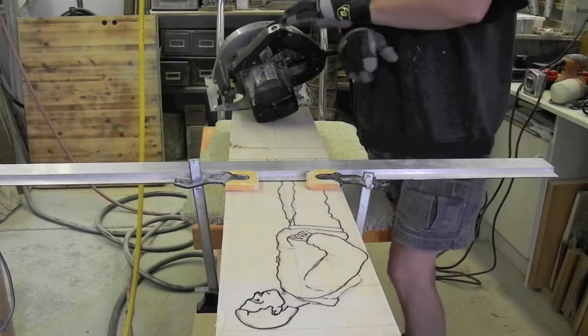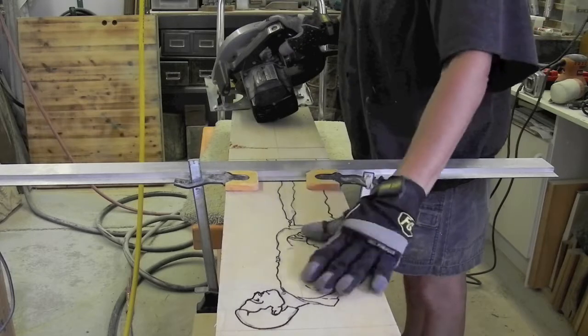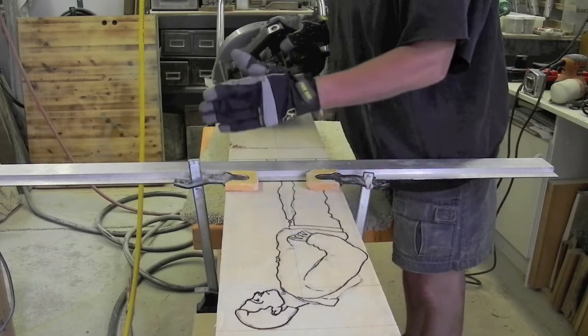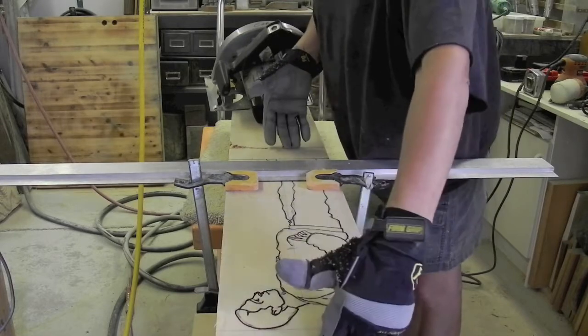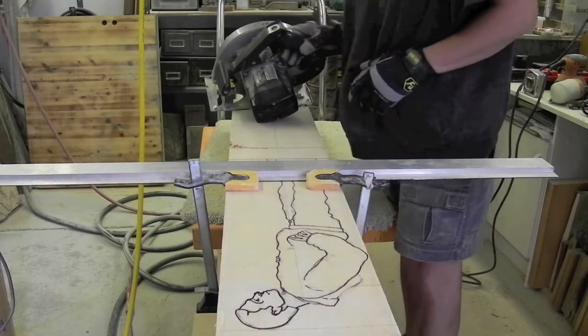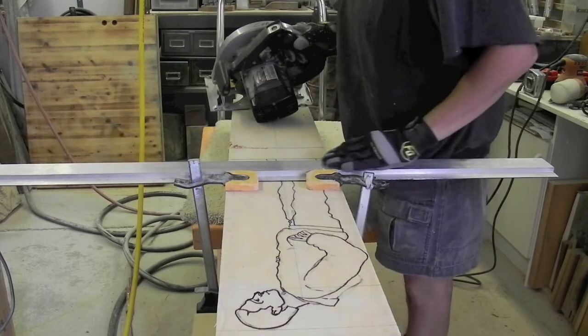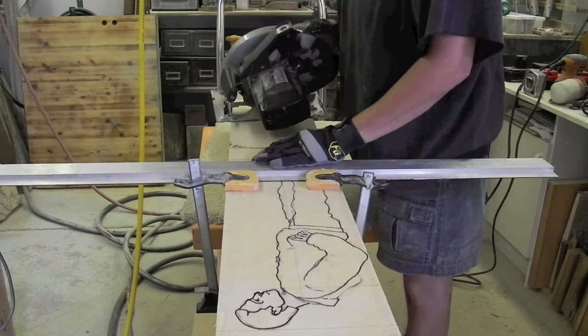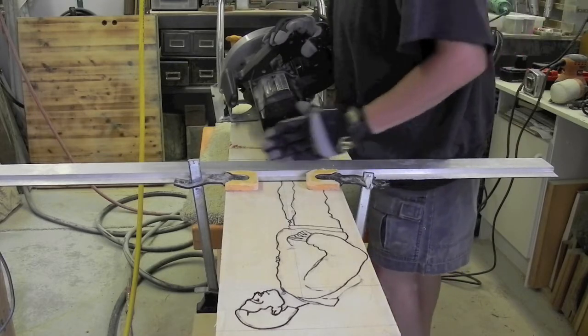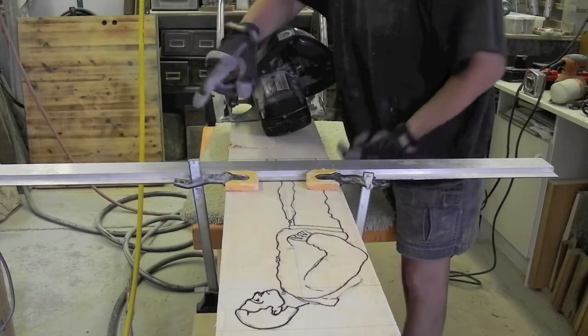All right, now that I have the profiles drawn out on the two sides and actually the front and back, I want to release the piece that I'm going to be sculpting from this larger piece of wood. So I have set up a straight line jig for my skill saw, and because the skill saw only can go so deep, I will cut one side, another under, and around.